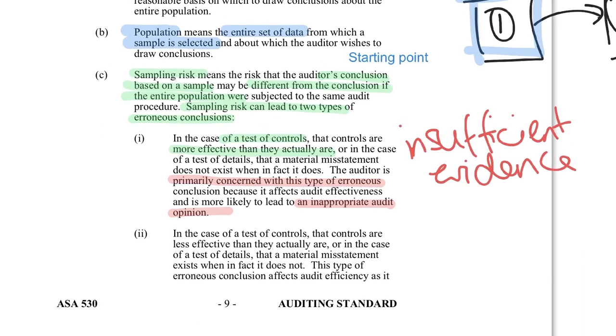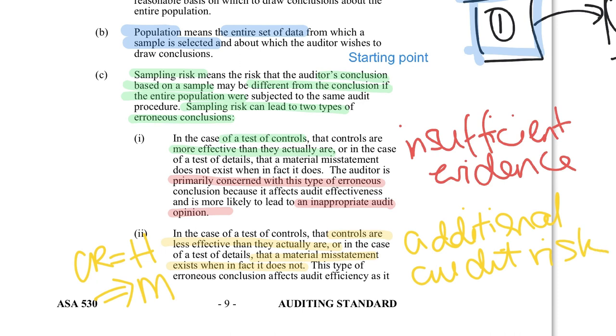The other option or the other risk is this one here. I'll do it in a different color. Let's use yellow. I might say controls are less effective than they actually are or that a material misstatement exists when it doesn't. So that's really like saying control risk is high when actually the proper result should be medium. Now here in this instance it usually just results in additional audit work. There is no increased risk in this instance of the wrong opinion like we have back up here. The only thing that does have an impact here is that we will end up decreasing our profit margin because that additional audit work takes increased audit effort and increased hours of work by the auditor.